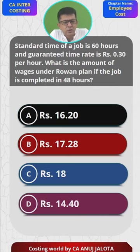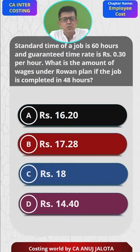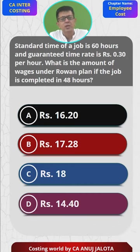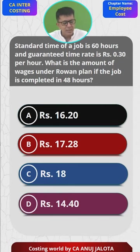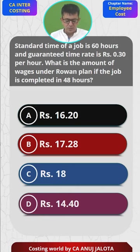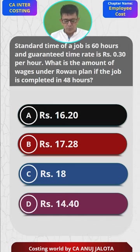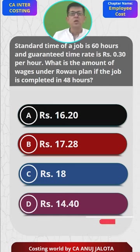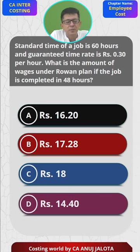Under the Rowan Plan, bonus = (time saved / time allowed) × basic wages. Time saved is 60 − 48 = 12 hours. So bonus = 12/60 × 14.4 = 2.88. Adding basic wages: 2.88 + 14.4 = 17.28. So the correct answer is 17.28.